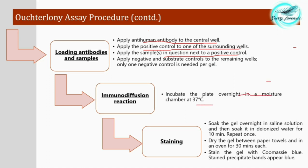Incubate the plate overnight in a moisture chamber at 37°C. For better visualization, you can stain the gel: soak overnight in saline solution, then soak in deionized water for 10 minutes, dry the gel, and stain with Coomassie Blue. The stained precipitate bands will appear blue, giving a direct indication that the sample is of human origin.